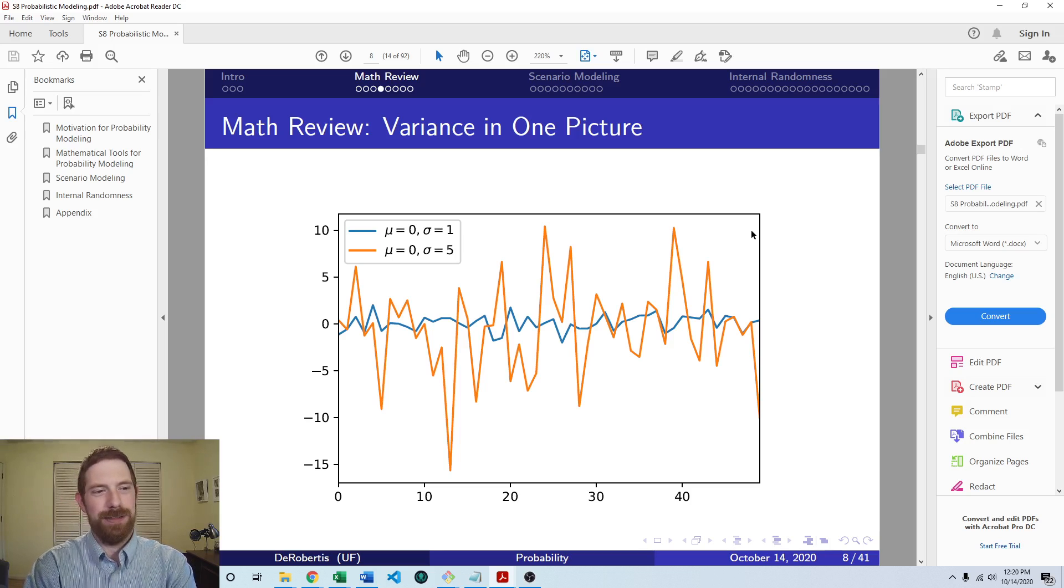And that we have two different random variables here, plotted across the different instances, occurrences of the random variable. And those two variables have the same exact mean or average or expected value. Where they differ is they have different variances. And you can look at that and clearly see those two lines look different. But you can also see, on average, they're both basically around zero.